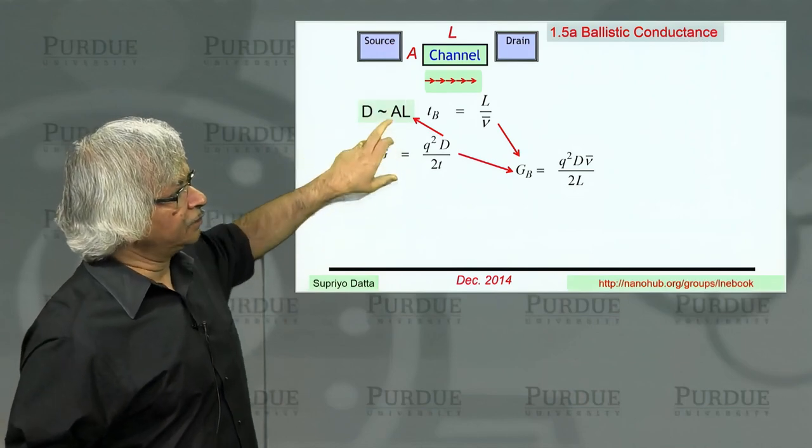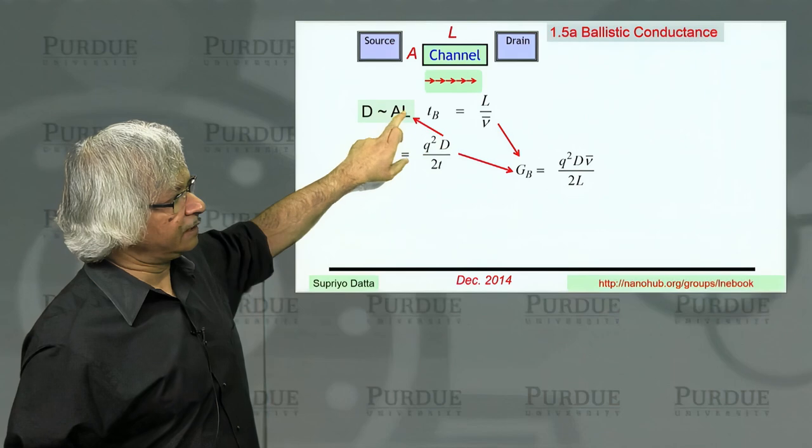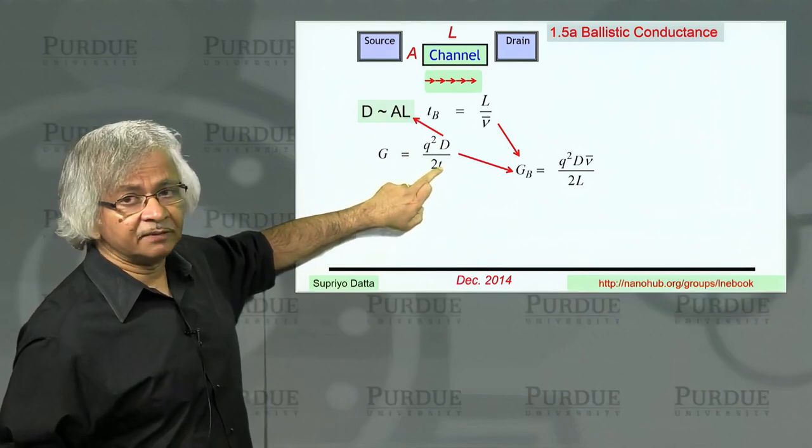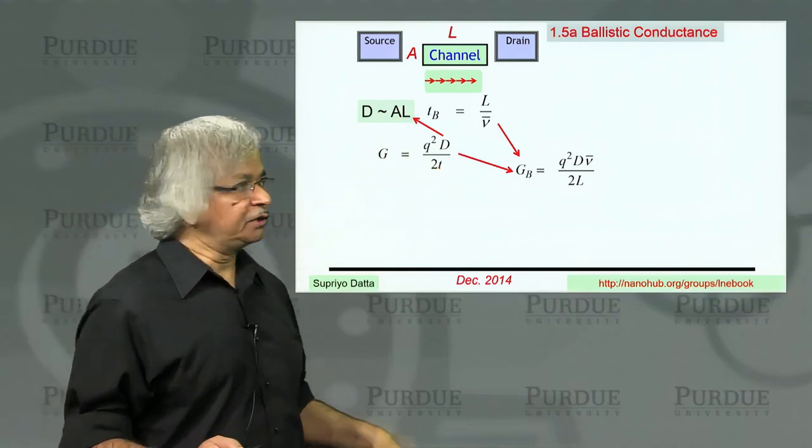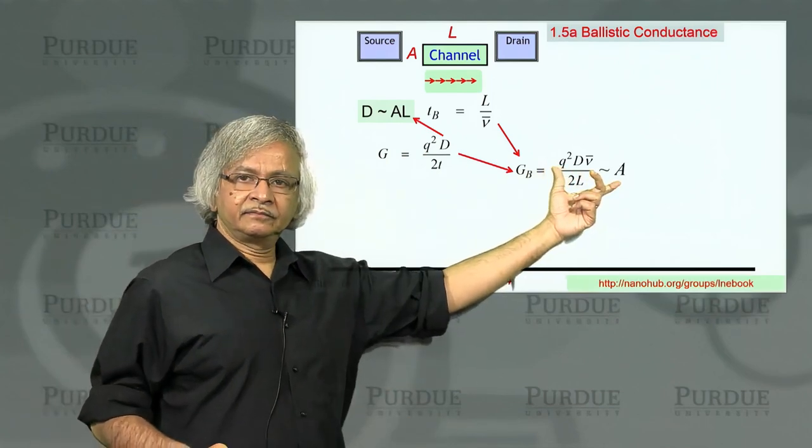The thing to note then is that this density of states is proportional to A times L, whereas the time itself depends on L. And so when you divide it, what you get depends just on the area.